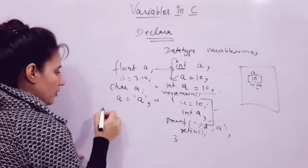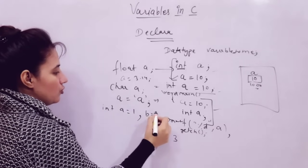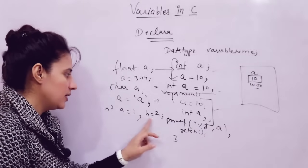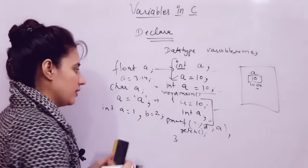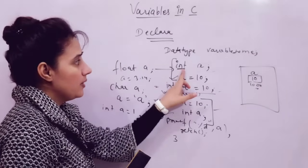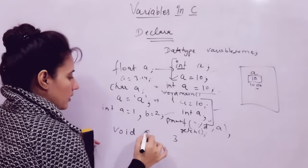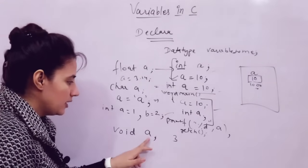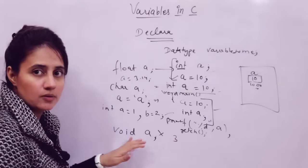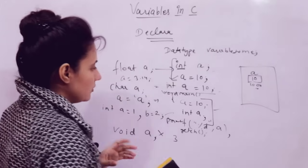You can also initialize more than one variable in a single statement, like 'int A = 1, B = 2;' — that is also correct. But keep in mind that the type of a variable cannot be void. Like we cannot write 'void A' — where the variable name is A and the type is void. This is incorrect and not possible.